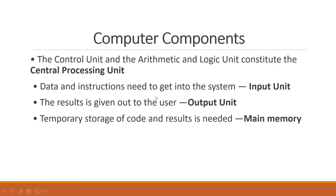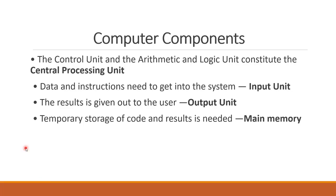Let's look at the computer components. The major components of a computer are: CPU, of course. We have a keyboard or a mouse — these are input units. We have a monitor or a printer — these are output units. We also have RAM and ROM, which means memory. These are the major components of a computer.